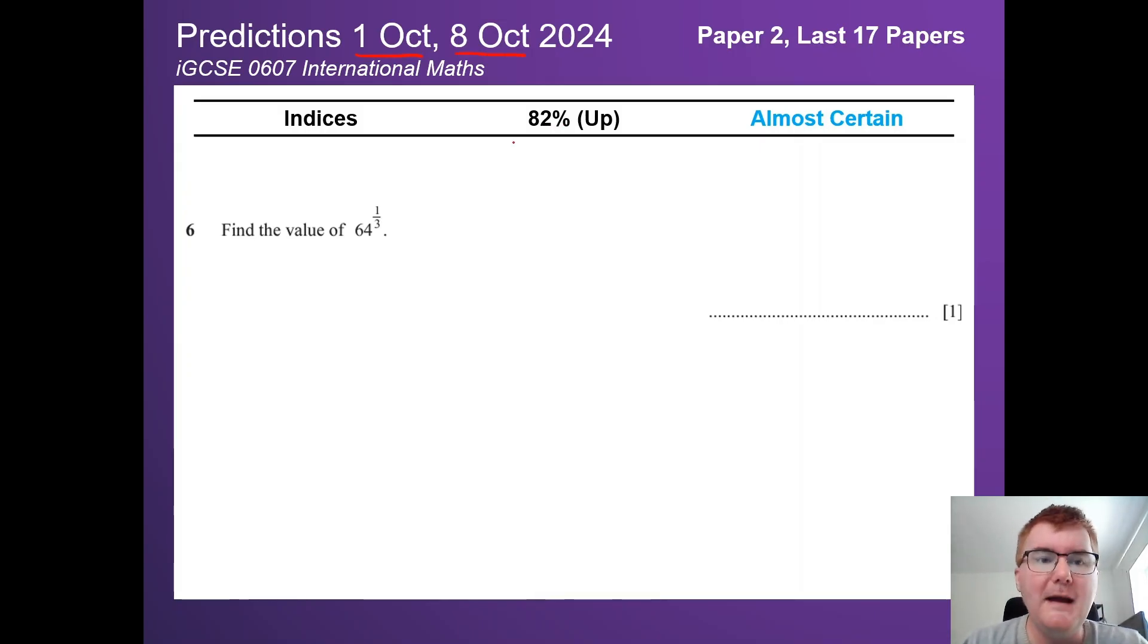Let's start with paper 2. We have indices slightly up here at 82%. This should be no surprise to you whatsoever. Remember, these questions are usually one or two marks. If you've got a fraction as an index, it's going to be a root. In this case, the cube root of 64, which equals 4. Make sure you know that topic very well.